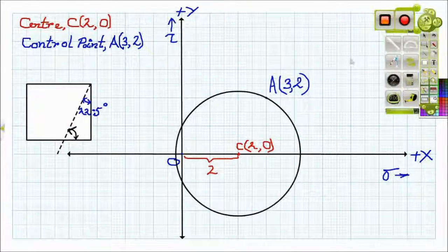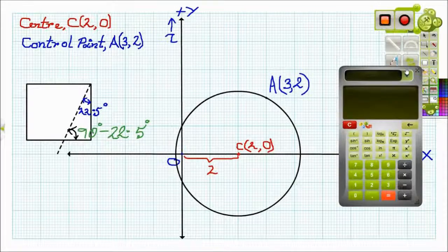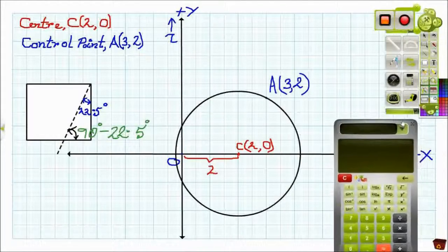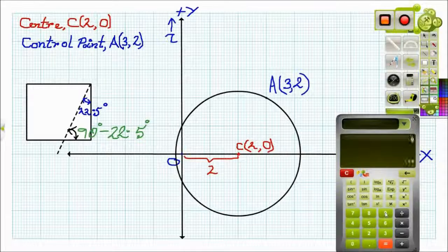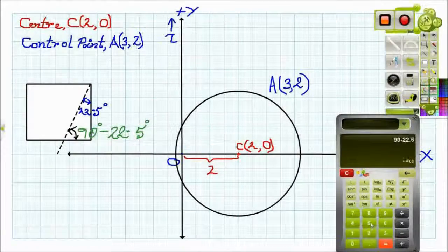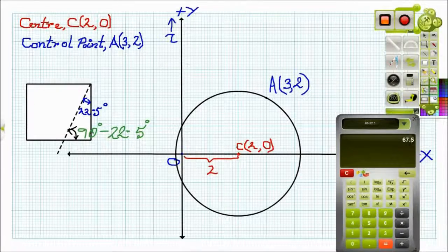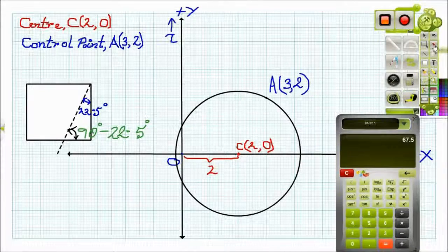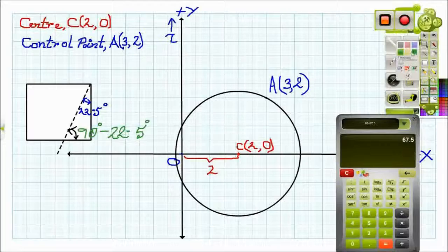Here we can clearly see that the inclined plane makes an angle 90 minus 22.5 degree with the horizontal. With the aid of a calculator, we get the value 67.5 degree.